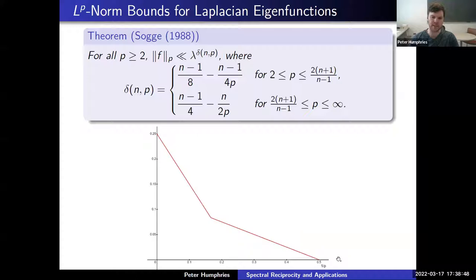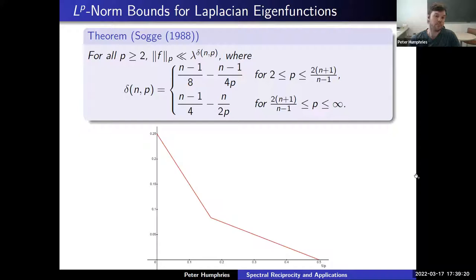There's a result of Chris Sogge from the 1980s. He showed there's a critical exponent: p equals 2(n+1)/(n−1). At that exponent, you can actually do a little bit better for the LP norm than by blindly interpolating between the L² norm and the L∞ norm. What he shows is that the LP norm of the Laplacian eigenfunction f is bounded by the eigenvalue to some power, depending on the dimension n and the exponent p. This is graphed here when n equals 2: the x-axis is 1/p and y-axis is delta₂(1/p). When p=2, 1/p = 1/2. When p=6, 1/p = 1/6 — this is the critical exponent. When p=∞, 1/p = 0, and we get 1/4, which is the L∞ value.